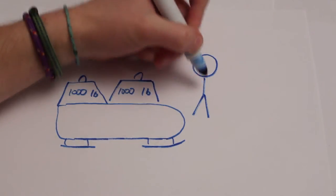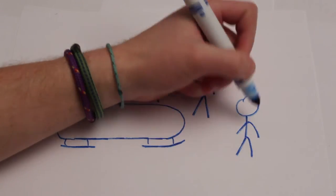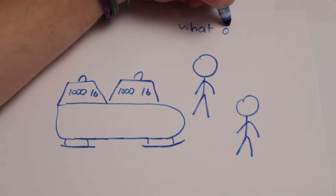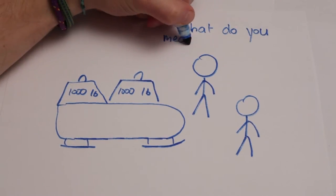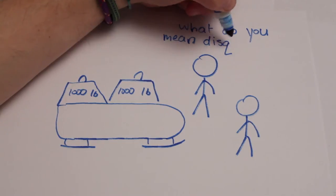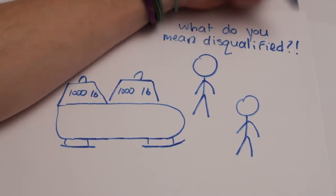To make sure that teams don't just pile on extra weight, also called ballast, or have an extremely heavy sled, there are limits as to how heavy the sleds can be on their own and with the whole team inside of it. Teams are weighed at the bottom of the track after each run.